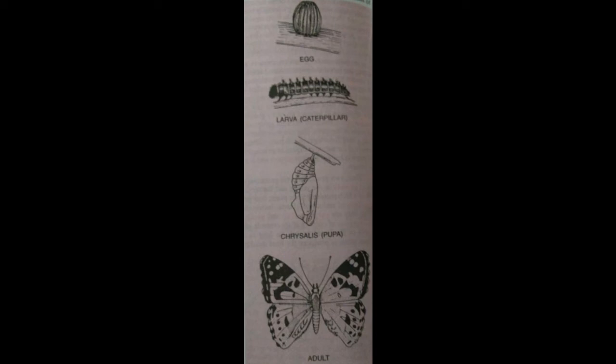They are the rudiments of the future organs of the imago. They form legs, mouthparts, internal organs and wings. This process of formation of organs of an imago from imaginal discs inside the pupa is known as histogenesis, and it results in the formation of the imago.